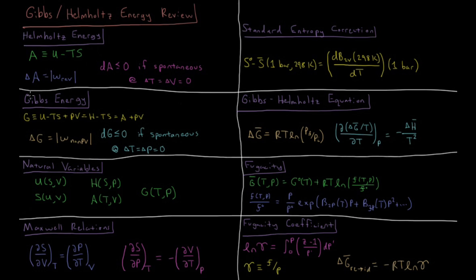We also have the Gibbs energy, which is defined as internal energy minus temperature times entropy plus pressure times volume. You can also calculate it as enthalpy minus TS, or Helmholtz energy plus PV.